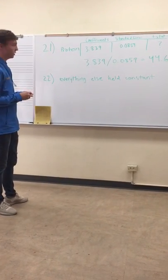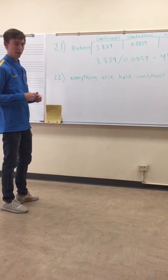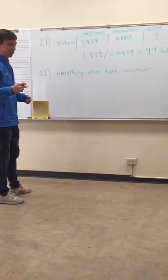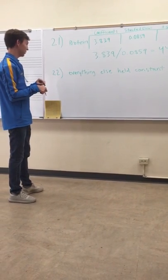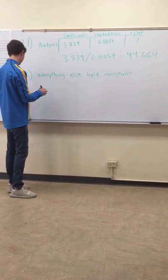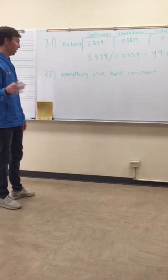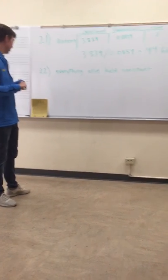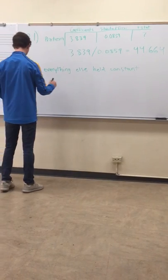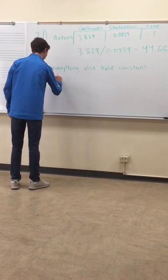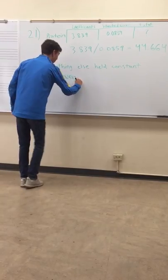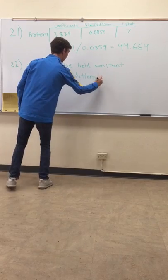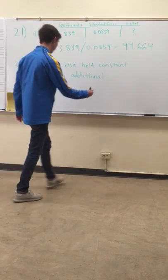Question 22 is asking to interpret the slope, which is the coefficient 3.839. Everything else held constant, for every additional gram of protein, the calories will go up by 3.839.